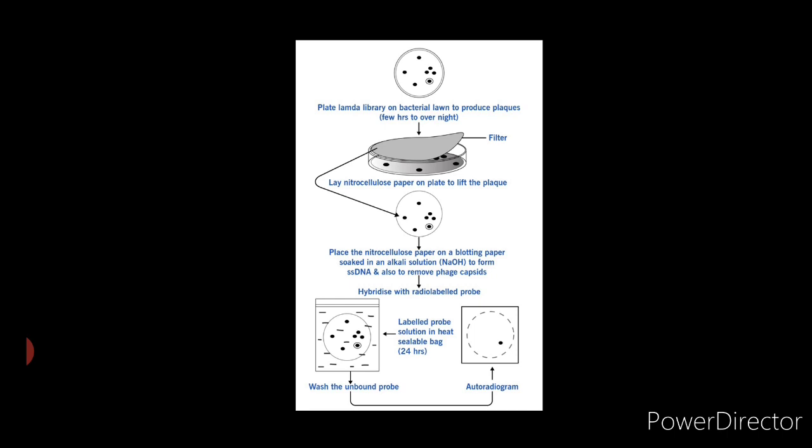If you can see in the figure, there are many steps involved in plaque hybridization. First, plate lambda library on bacterial lawn to produce plaques. It is kept for few hours to overnight. Next step, lay nitrocellulose paper on plate to lift the plaques.